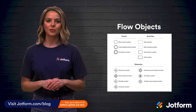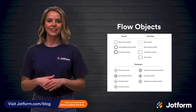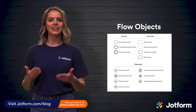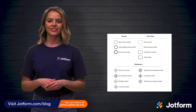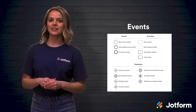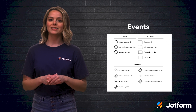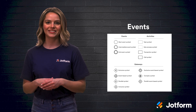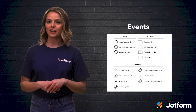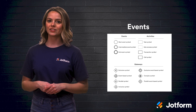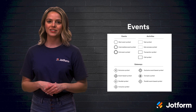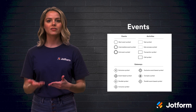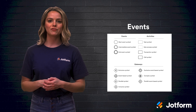First, we have flow objects. This includes events, activities, and gateways. An event is a trigger that initiates, modifies, or finishes a flow process. They are represented as circles on the flowchart, and they each contain a symbol that represents an event type.